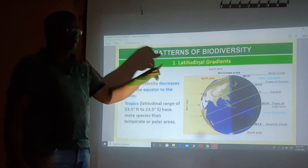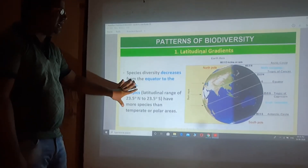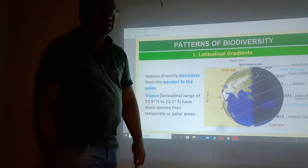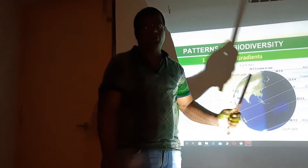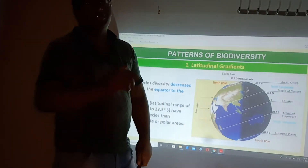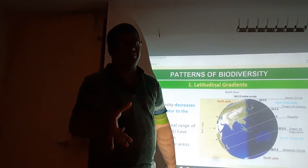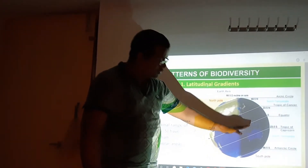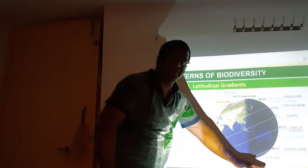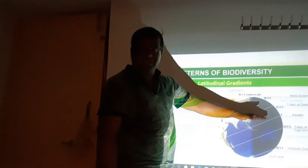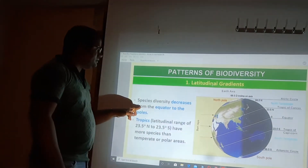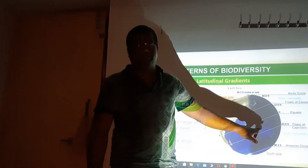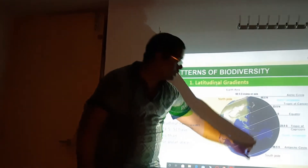Write down this line: species diversity decreases from equator to the poles. Zero degree is equator. 23.5 north, 23.5 south — that is the Tropic. So, when we move away from the equator towards the north or towards the south, the species diversity is going to decrease. As we move away from the equator and away from the Tropic, species diversity decreases — whether towards the north or towards the south.